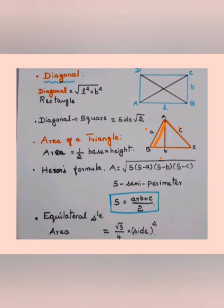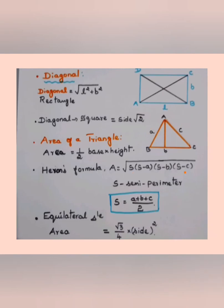If only the side lengths are given and the height is not given, we use Heron's formula. First calculate the semi-perimeter: s = (a + b + c) / 2. Then the area is: A = √[s(s − a)(s − b)(s − c)], where a, b, c are the three side lengths.